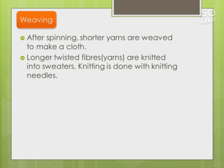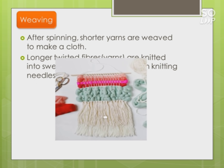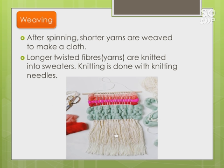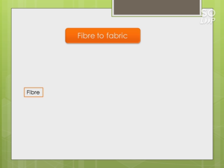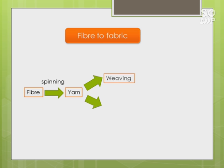Longer twisted fiber yarns are knitted into sweaters. Knitting is done with the help of needles - you must have seen your mothers making sweaters during summer with knitting needles, which is very common in army areas. To summarize the fiber to fabric chain: fiber is a continuous filament which can be molded into yarn, and yarn can be woven or knitted into fabrics.